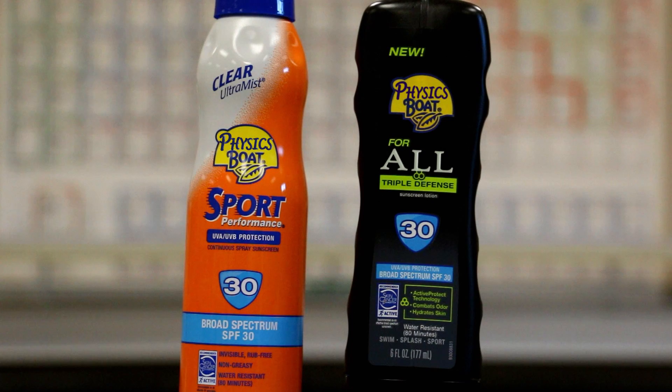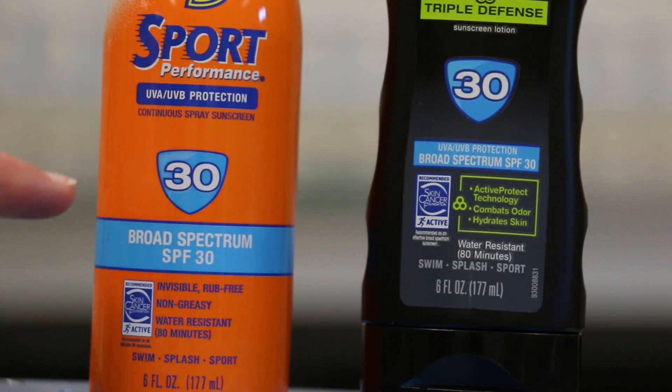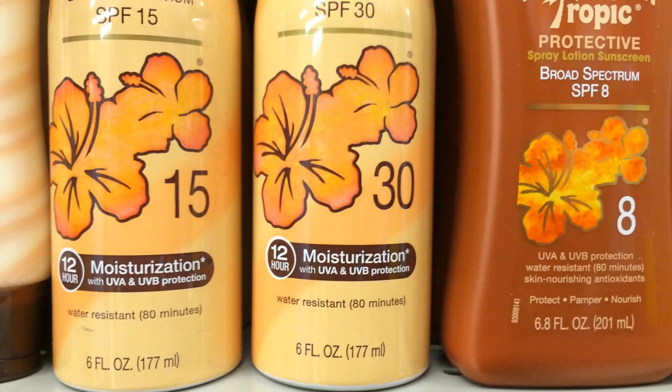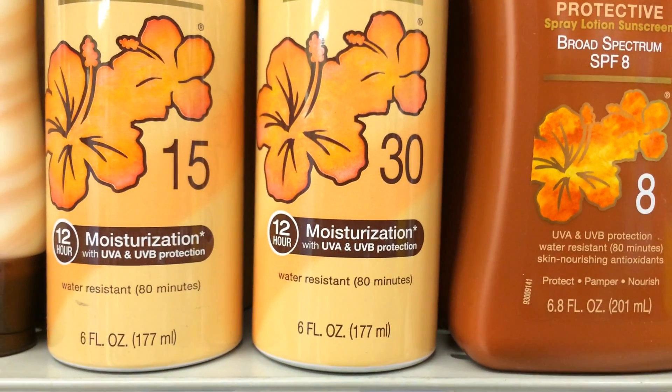Most good sunblocks and sunglasses will advertise that they block UVA and UVB. Broad spectrum. They don't even bother to mention UVC because there is so little of it that reaches Earth's surface.